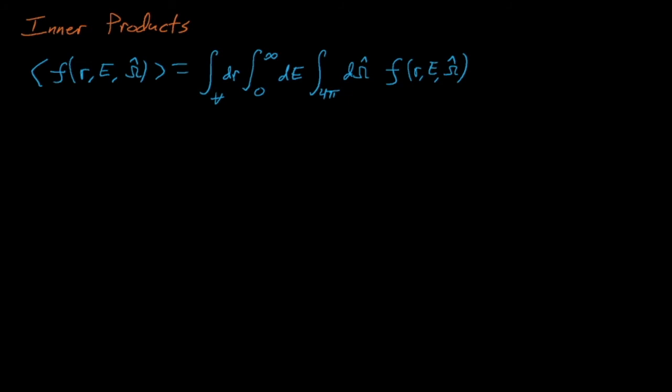The inner product of some quantity f really just takes the integral of f over all of its dependent variables. Essentially we take the total sum of our f quantity over the entire system. An example of this is if we might want to find the total number of neutrons integrated over space, energy, and direction in some system. Another example which we probably saw in our undergraduate courses was if you want to determine the fission rate in the entire system because you want to normalize the power in that reactor. Essentially this inner product is the Liam Neeson of mathematical operators. It will find your variables and it will integrate them.